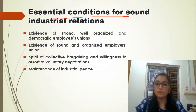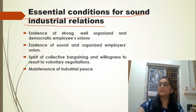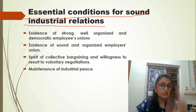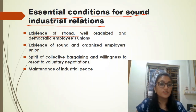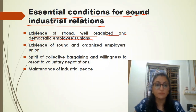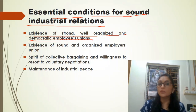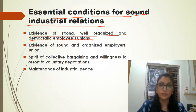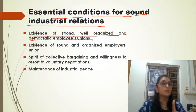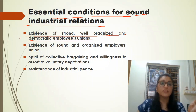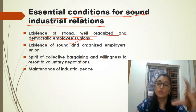Now, the essential conditions for sound industrial relations. The first condition is a strong, well-organized, and democratic employees' union — a trade union. If you have a good union working in the right way, management and employees can create a good bonding. If there is an important, well-functioning union of employees, the industrial relations will automatically improve.